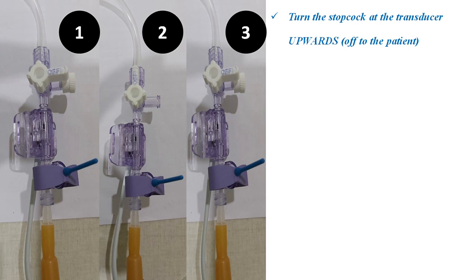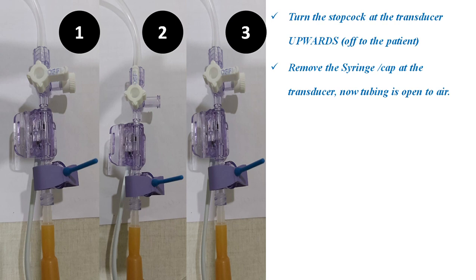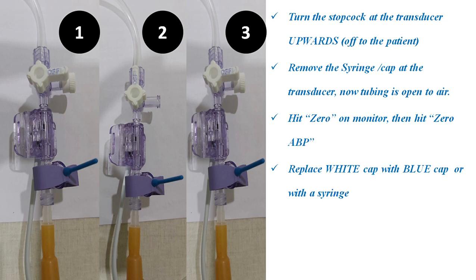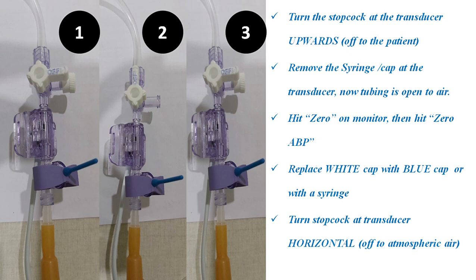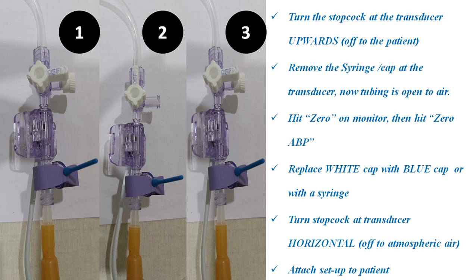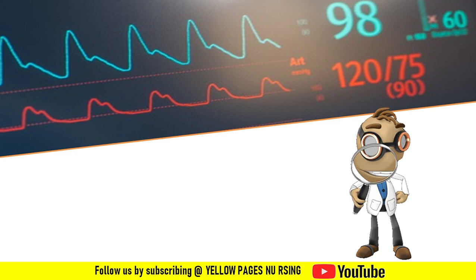Turn the stopcock at the transducer upwards, off to the patient side. Remove the syringe or cap at the transducer so the tubing is open to air. Hit 'zero' on the monitor, then hit 'zero ABP.' Replace the white cap with a blue cap or syringe, then turn the stopcock at the transducer horizontal — off to atmospheric air. Now attach the setup to the patient's arterial line. Once attached, a clear waveform will appear on the monitor.